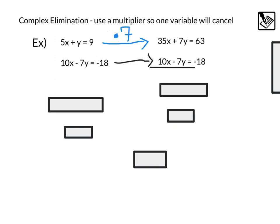Going from there, just like before, we can add these equations together. That's going to give us a 45x, 35 plus 10. 7y and negative 7y cancel out equals 63 minus 18, which is 45. Solving that, we get an x value of 1.